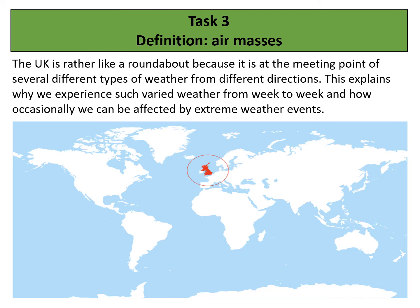Air masses are known as a large body of air, and within that body they are all the same. However, not all air masses are the same — that depends on where they come from. On this map I've circled the UK, and depending on which direction an air mass travels to get to the UK depends on the weather that it will bring with it.